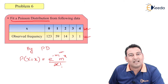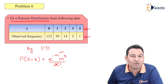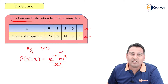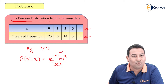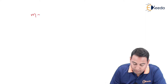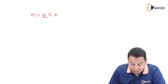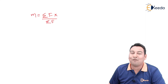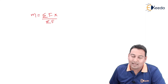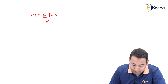Remember the second case of binomial distribution? The case was where the nature of the coin is not known. Remember the formula of m used there? The same formula I am going to apply here. The formula is: m equals summation of fx upon summation of f. This is the formula of m I used there and the same formula will be used here.